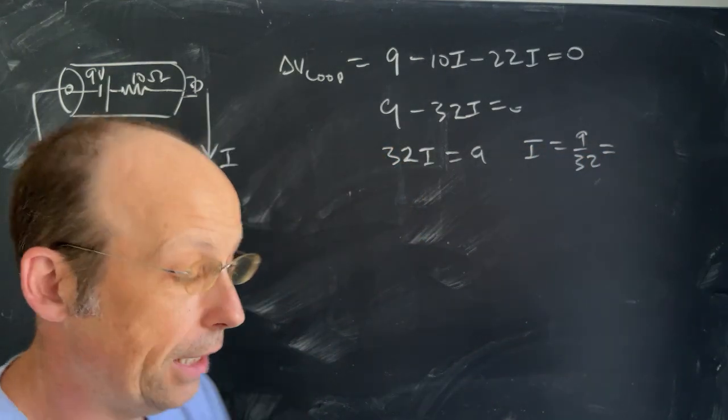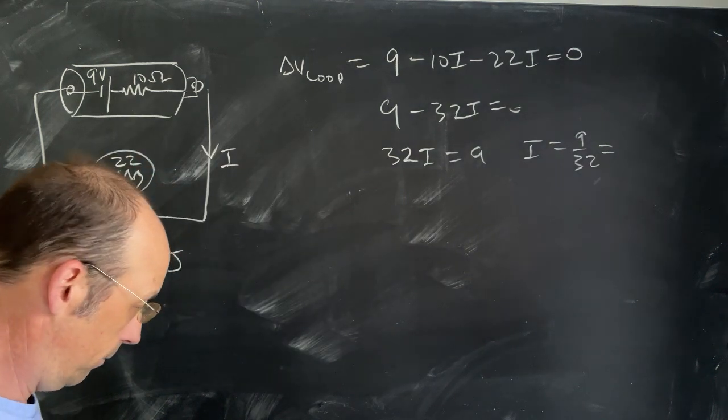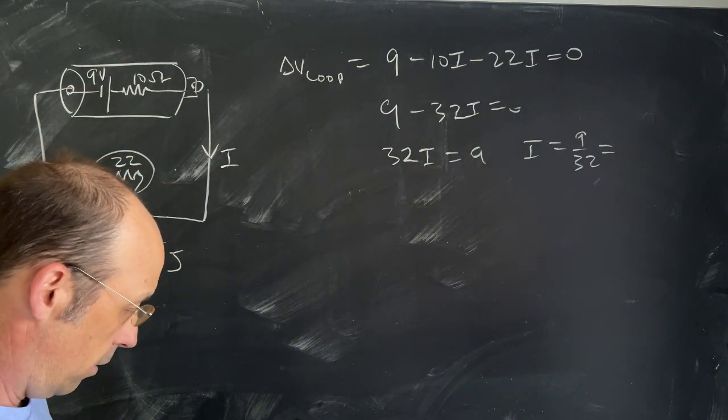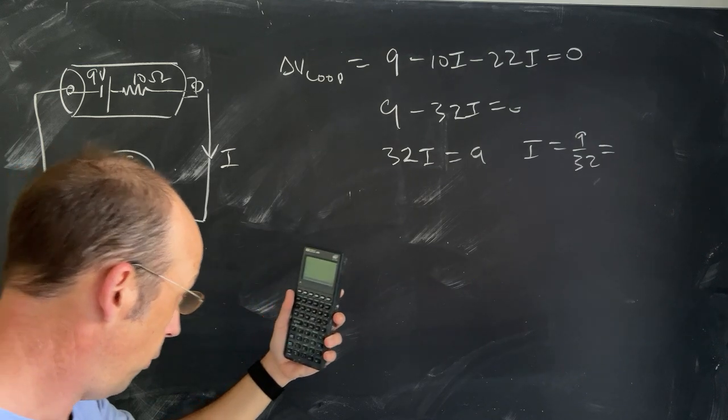So the current would be 9 divided by 32, which is 0.28 amps.